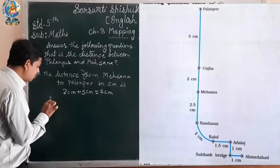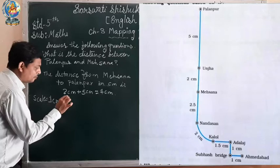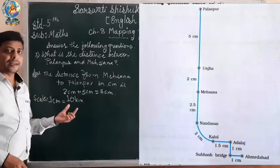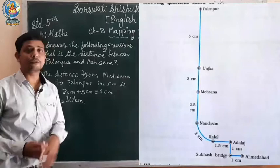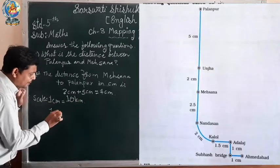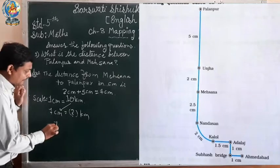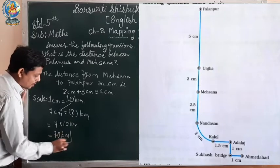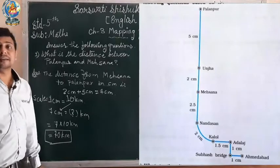Now we know the scale: 1 centimeter equals 10 kilometers. We have to convert 7 centimeters into kilometers. So 7 multiplied by 10 kilometers equals 70 kilometers. The distance between Palanpur and Mahsana is 70 kilometers.